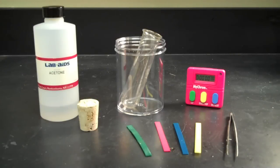In this video, we will demonstrate the effects of acetone on four different types of plastic. Before doing this experiment, we need to observe the characteristics of each type of plastic.